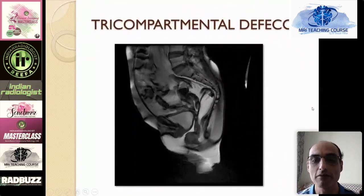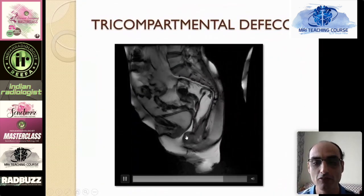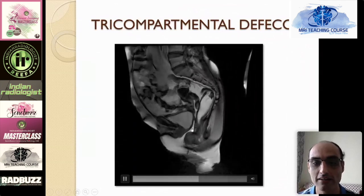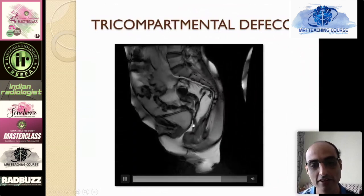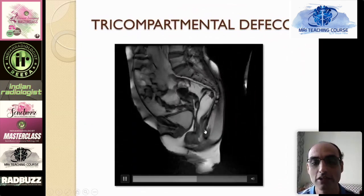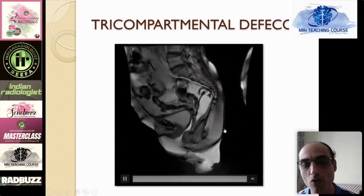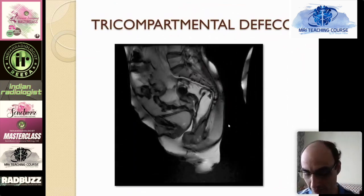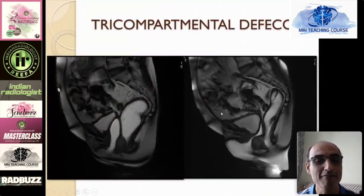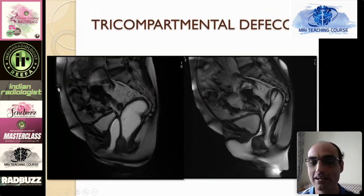This is a tricompartmental defecogram. Ultrasound jelly has been instilled in the vaginal vault as well as the rectum, so you have the bladder, the vaginal vault, and the rectum all opacified. This is done when surgeons want detailed information about the vaginal vault position as well. You can see the vaginal vault beautifully between the two compartments, allowing exact assessment of its position.